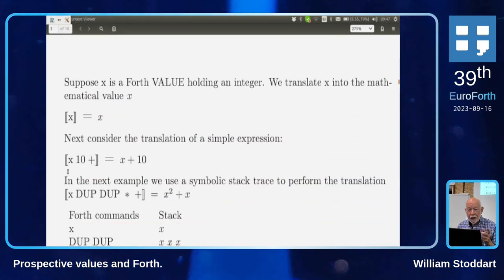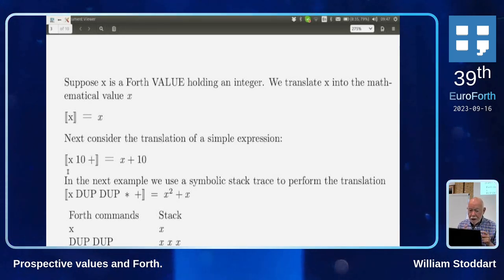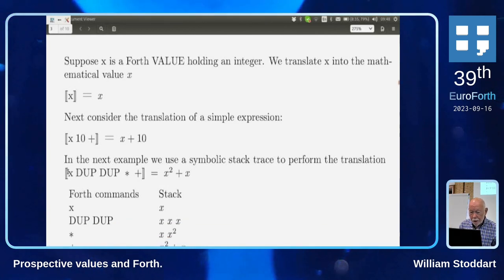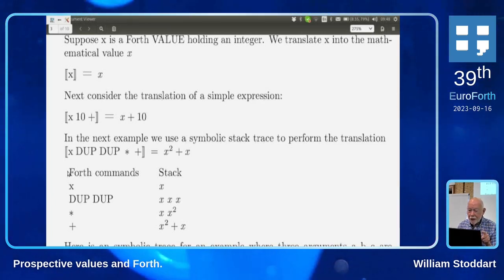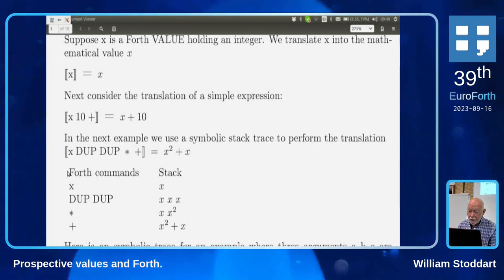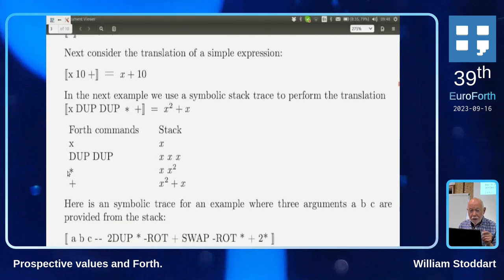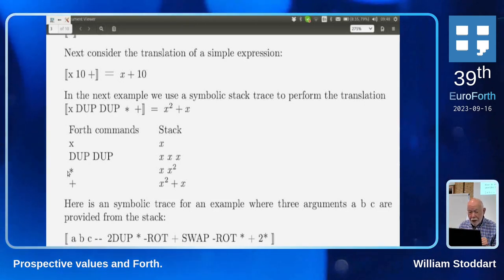We translate individual variables and use typeface to make things clearer: mathematics is in italic and Forth is in roman typeface. It's case-sensitive, so a capital X is completely different from a small x. For example, ⟦x 10 plus⟧ translates to x + 10, and ⟦x dup dup times plus⟧ translates to x² + x — you can work those out with a stack trace.